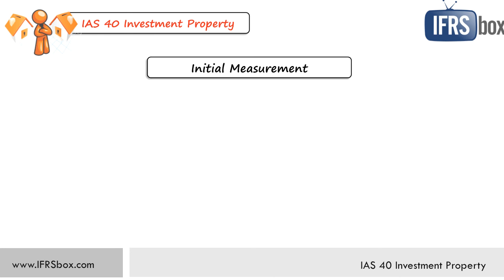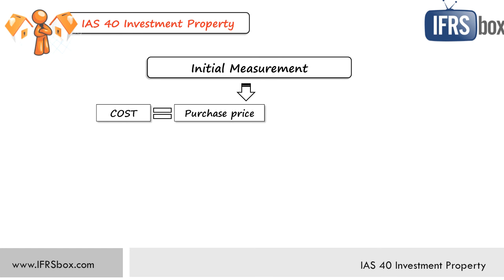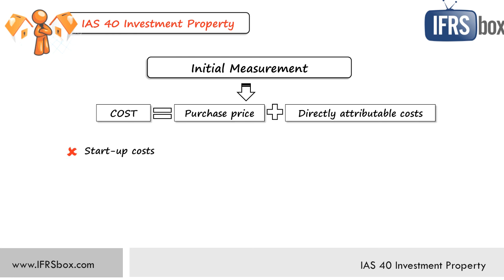How do we measure investment property initially — that is when it's recognized in the financial statements for the first time? We do it at cost including transaction costs. The main components are purchase price and any directly attributable expenditures, such as professional or legal fees. Be careful: we do not include startup expenses to investment property unless they are directly attributable to that property. We also don't include operating losses in the pre-operation stage, or abnormal waste of materials, labor and other resources incurred at development of investment property.